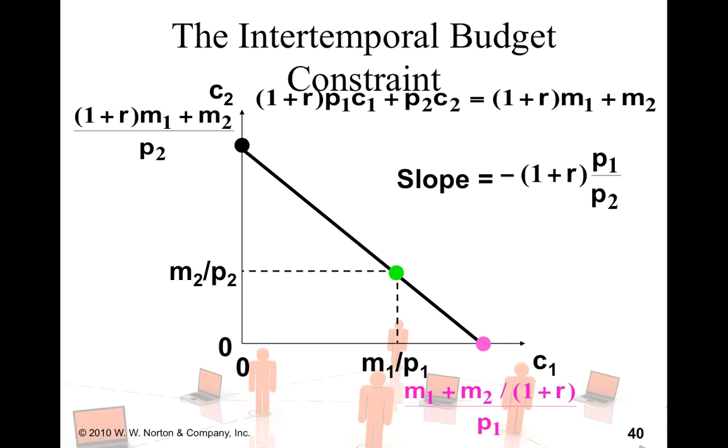Now, once you solve this equation for c2, you will find that 1 plus r, which is the slope of this line, gets multiplied by this p1 divided by p2. It's a ratio of the prices of these two consumption bundles. And this whole thing here becomes the slope of this line.